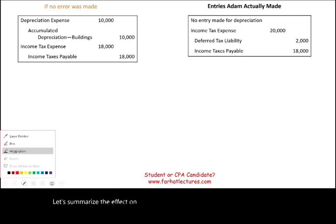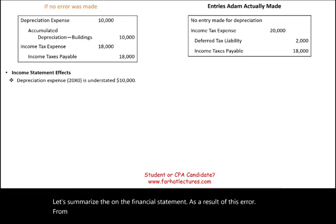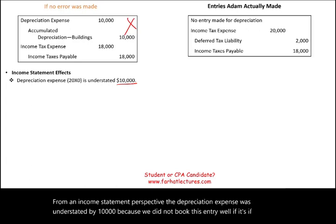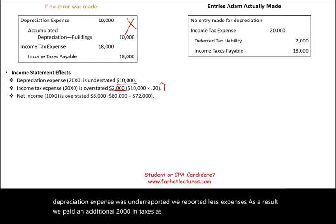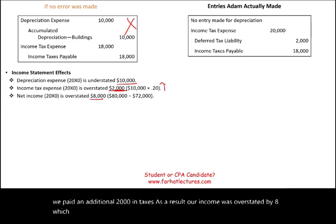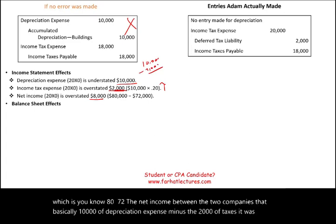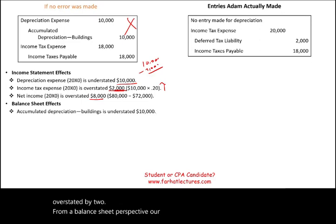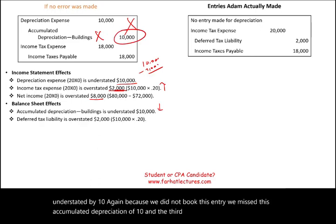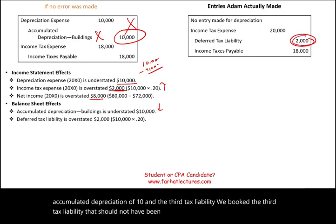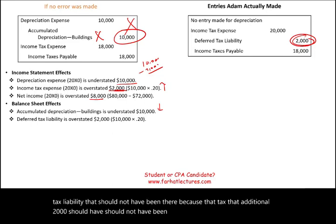Summarizing the effect of the error on the financial statements: on the income statement, depreciation expense was understated by $10,000, resulting in net income overstated by $8,000 ($10,000 minus $2,000 in taxes). On the balance sheet, accumulated depreciation was understated by $10,000, and there is a $2,000 deferred tax liability that should not have been there — that $2,000 should have been taken as tax expense in 20X0.